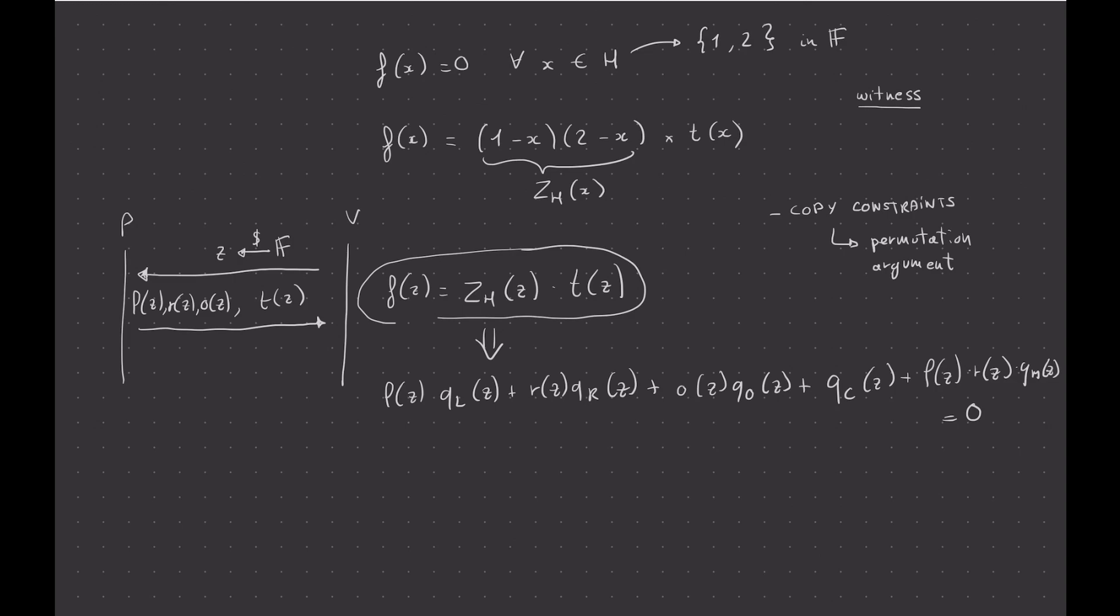And if you remember correctly, the Schwarz-Zipper lemma tells us that if this is equal to 0 for a random point z—did I say zeta? Yeah, it's z. If it's 0 for a random point z,